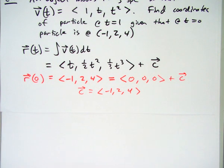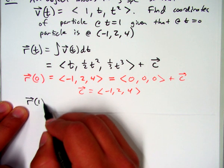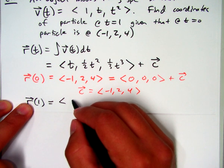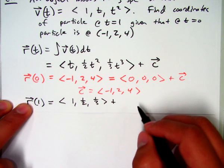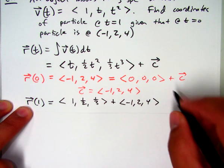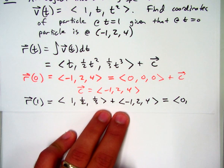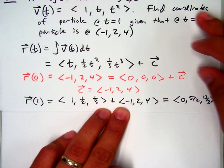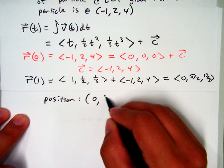So now what do I do to find position at t equals 1? Then r(1) is going to be (1, 1/2, 1/3) plus the constant vector, which was (-1, 2, 4). So our current position at t equals 1 gives us a vector endpoint of (0, 5/2, 13/3). And that vector endpoint corresponds to the position coordinates of exactly the same value, (0, 5/2, 13/3).